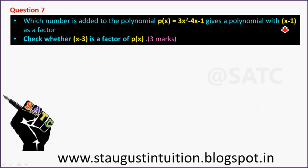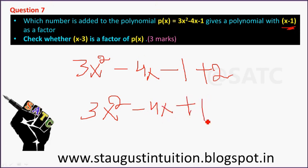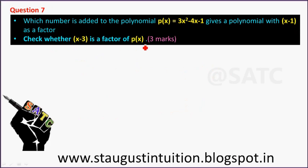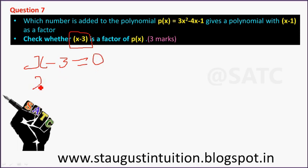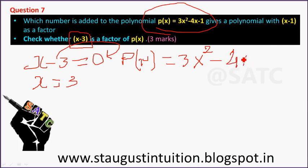When we add to the polynomial: 3x squared minus 4x minus 1 plus 2, that becomes equal to plus 1. For the second question, check whether x minus 3 is a factor of p of x, where p(x) equals 3x squared minus 4x minus 1.